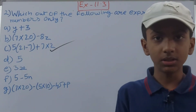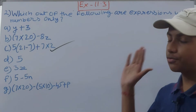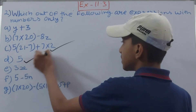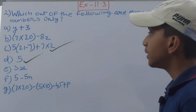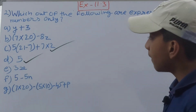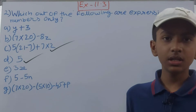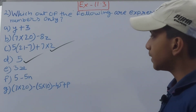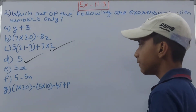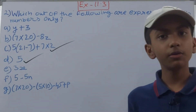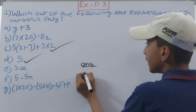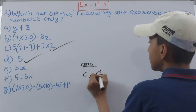Part d: 5 — again, only a number is there, so you can mark this as an expression with numbers. Then 3x — x is a variable, so no. 5 − 5n — n is a variable, so next. Then 7 × (20) − (5 × (10) − 45) + p — p is also a variable, so this is also not.